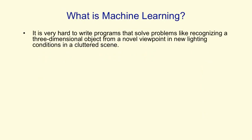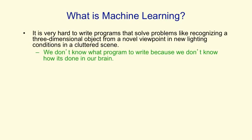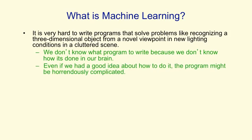The reason we need machine learning is that there are some problems where it's very hard to write the programs. Recognising a three-dimensional object, for example, when it's from a novel viewpoint in new lighting conditions in a cluttered scene, is very hard to do. We don't know what program to write because we don't know how it's done in our brain. And even if we did know, it might be a horrendously complicated program.